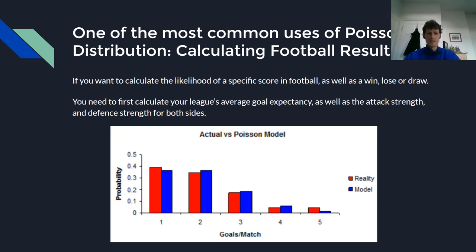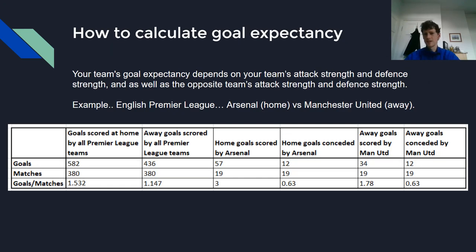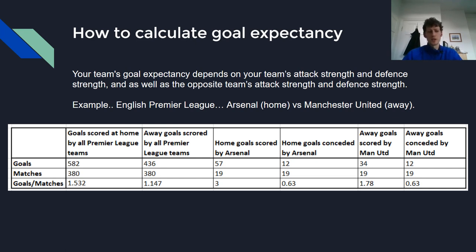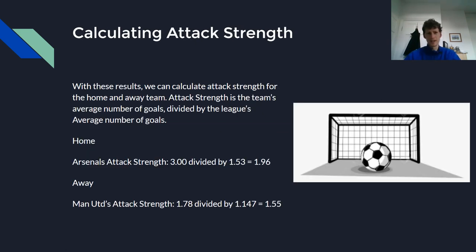In order to do this, we need to first calculate our league's average goal expectancy as well as the attack strength and the defence strength for both teams. In our example, we're going with a game in the English Premier League between Arsenal and Manchester United. In the table below, you can see all of the information we need: goals scored at home by all Premier League teams, away goals scored by all Premier League teams, home goals scored by Arsenal, home goals conceded by Arsenal, away goals scored by Manchester United, away goals conceded by Manchester United, and then the averages.